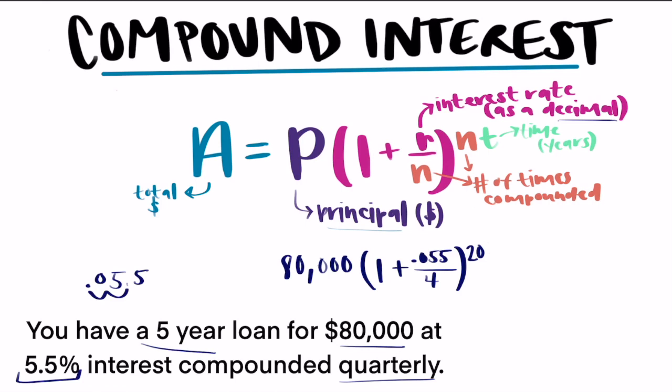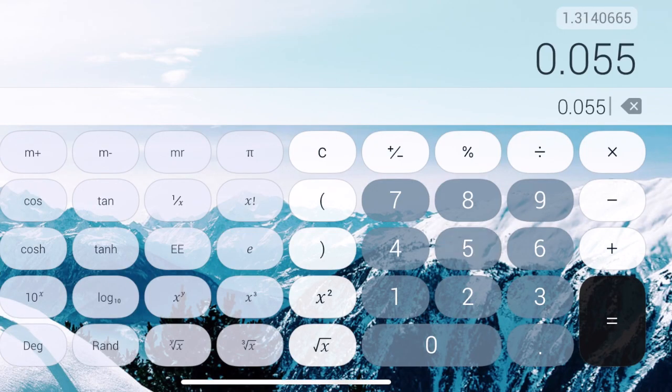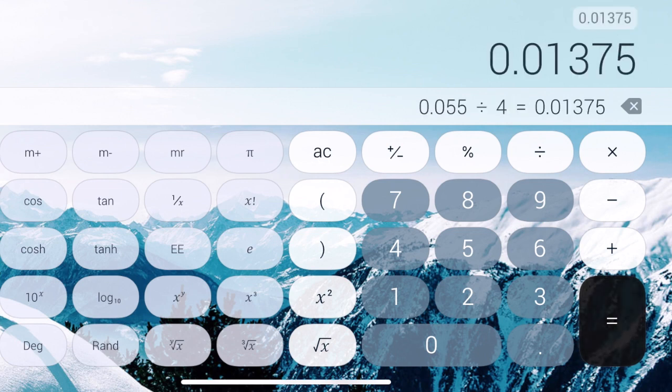Now you have your equation set up and you can just type it into your calculator. How I would suggest if you have a calculator that's picky about it. So if you're using like an iPhone or like a phone calculator, you're not going to be able to just type this in as is. You're going to want to start with your rate. So 0.055 divided by 4 plus 1.